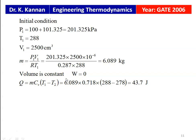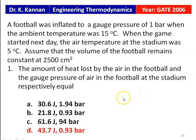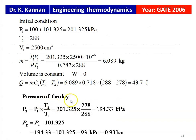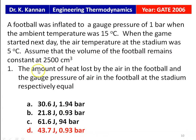Since volume is constant, W = 0. Heat transferred Q = m·Cv·(T1 − T2) = 6.089×10⁻³ × 0.718 × (288 − 278) = 43.7 joules. For the gauge pressure on the next day: P2/P1 = T2/T1 (constant volume process), so P2 = 201.325 × 278/288 = 194.33 kPa absolute. Gauge pressure = 194.33 − 101.325 = 93 kPa = 0.93 bar. The heat lost is 43.7 joules and the gauge pressure is 0.93 bar.